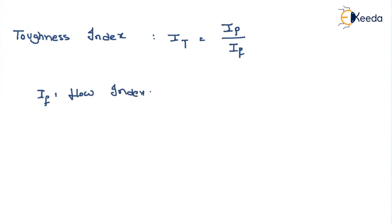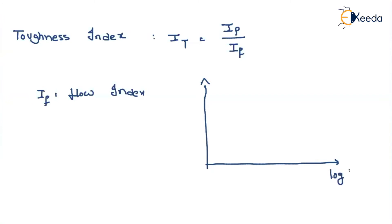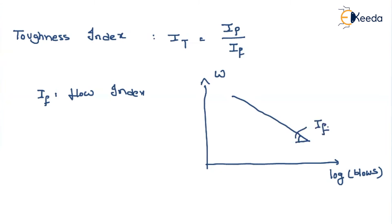In the liquid limit test, as we have seen, we draw a graph with respect to the number of blows and the water content. Along the x-axis, if we take a logarithmic variation — that means logarithm of blows — and along the y-axis we represent the water content, then the graph will vary like this. Whatever the slope of the curve, we call it If, the flow index. Let us see how we can find out this slope.